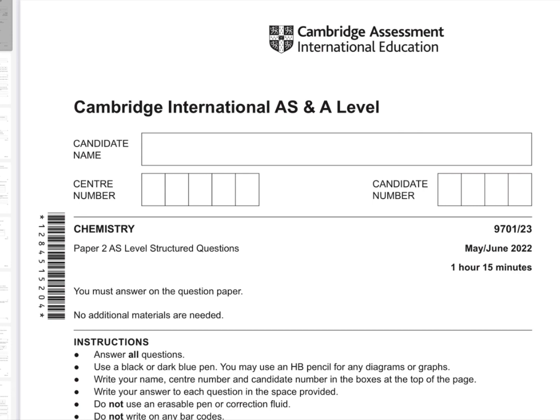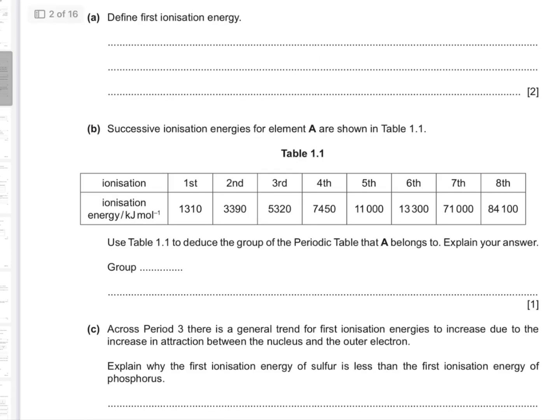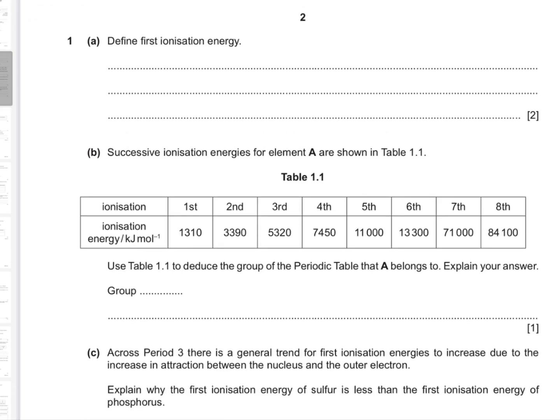Question 1a: Define first ionization energy. Ionization energy is the energy required to remove an electron from each atom in one mole of gaseous atoms. When the first electron is removed, that would be the first ionization energy.